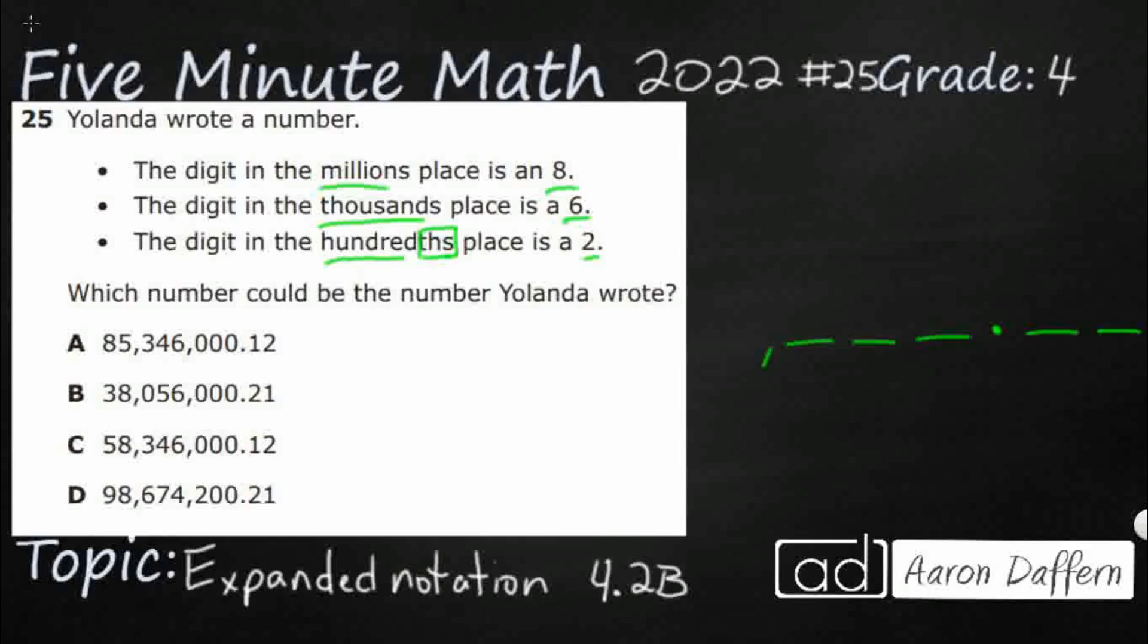I'm going to do comma. One thousands, ten thousands, hundred thousands. One millions, ten millions, hundred millions. Wow, that's a big number.